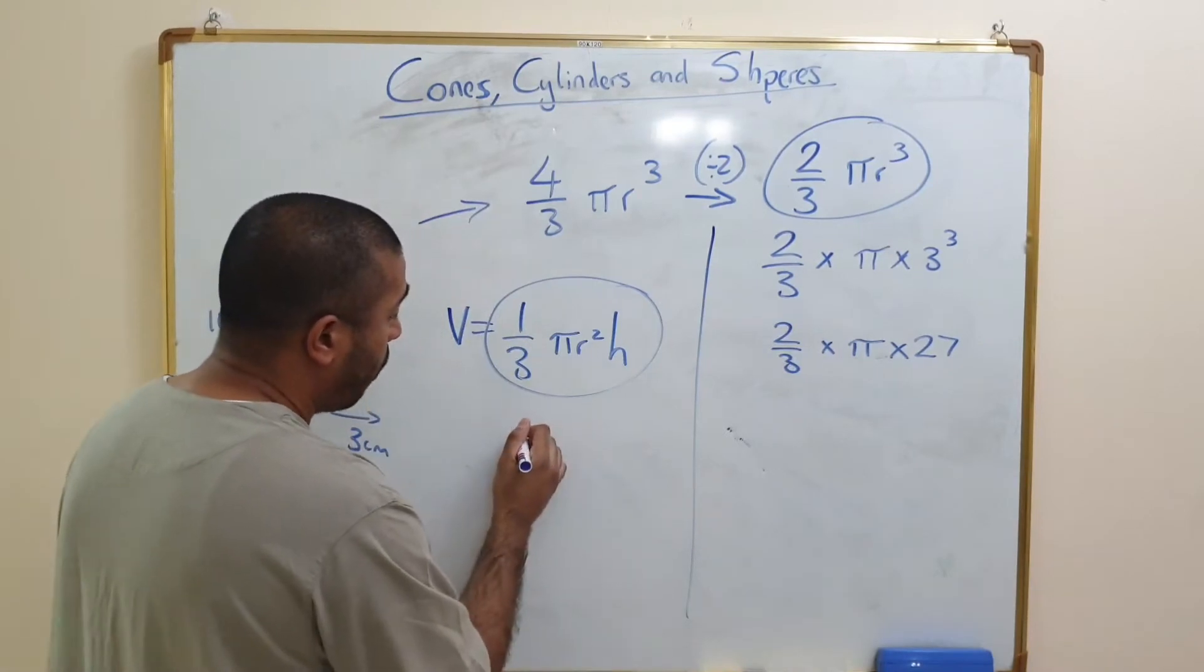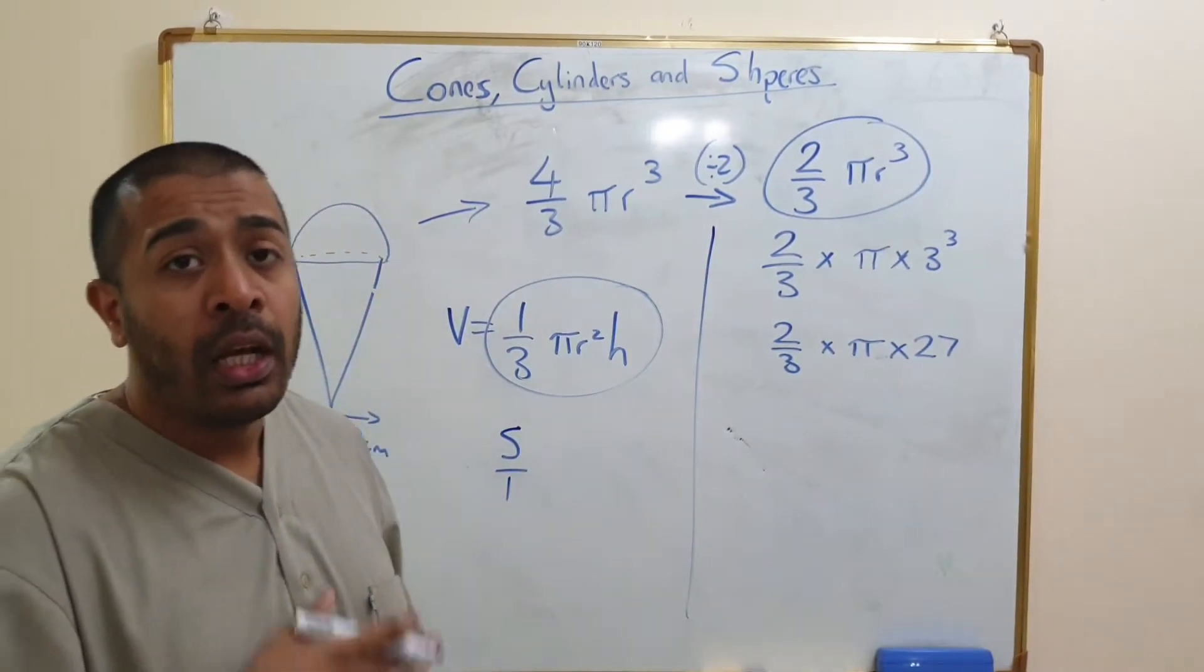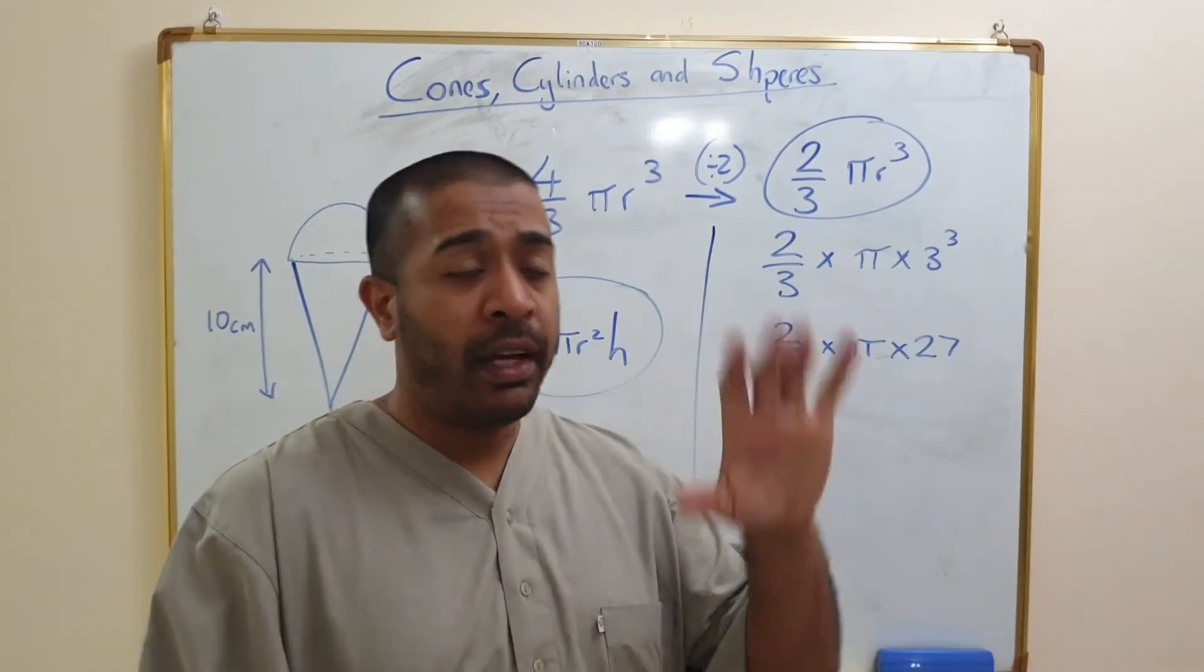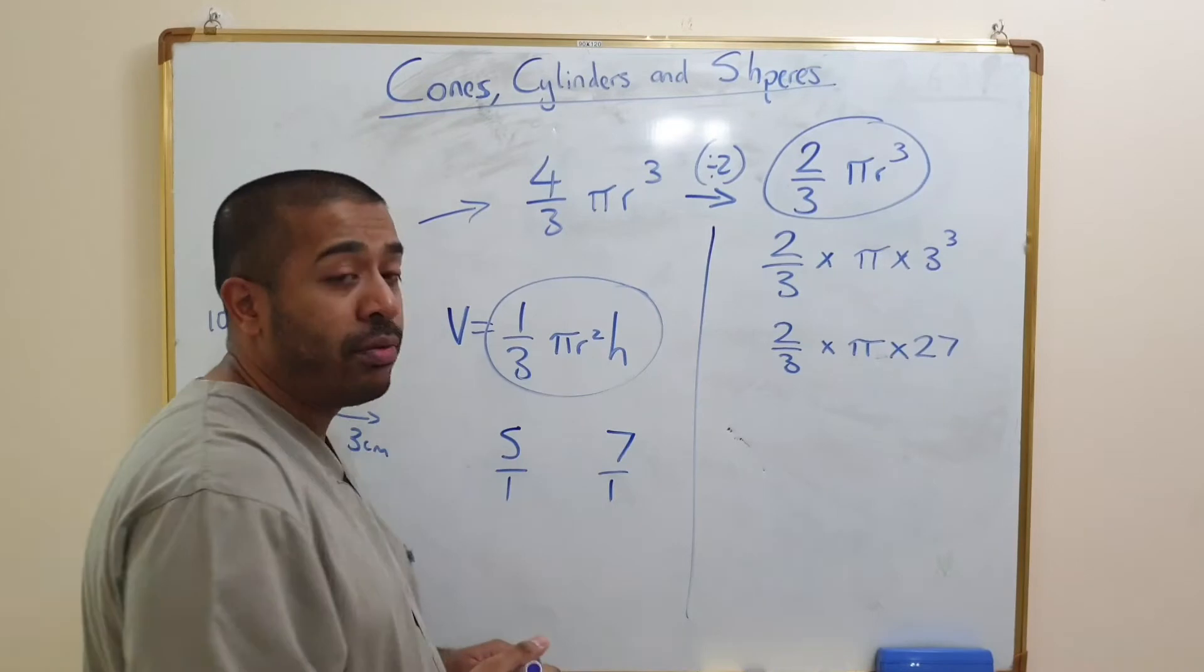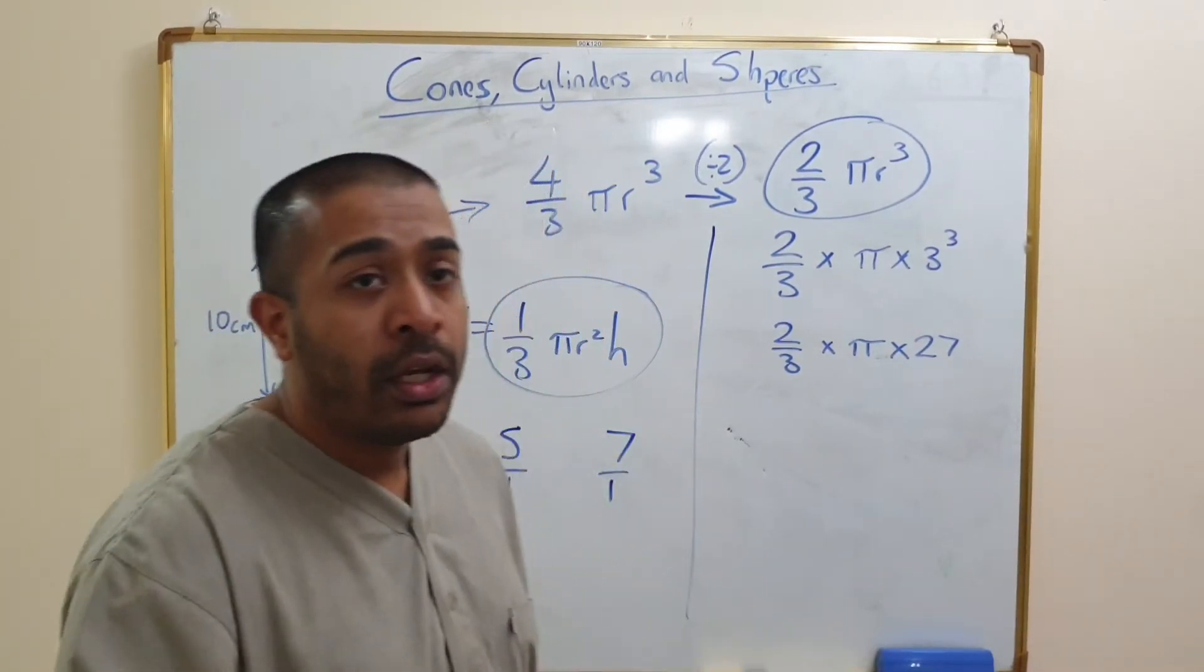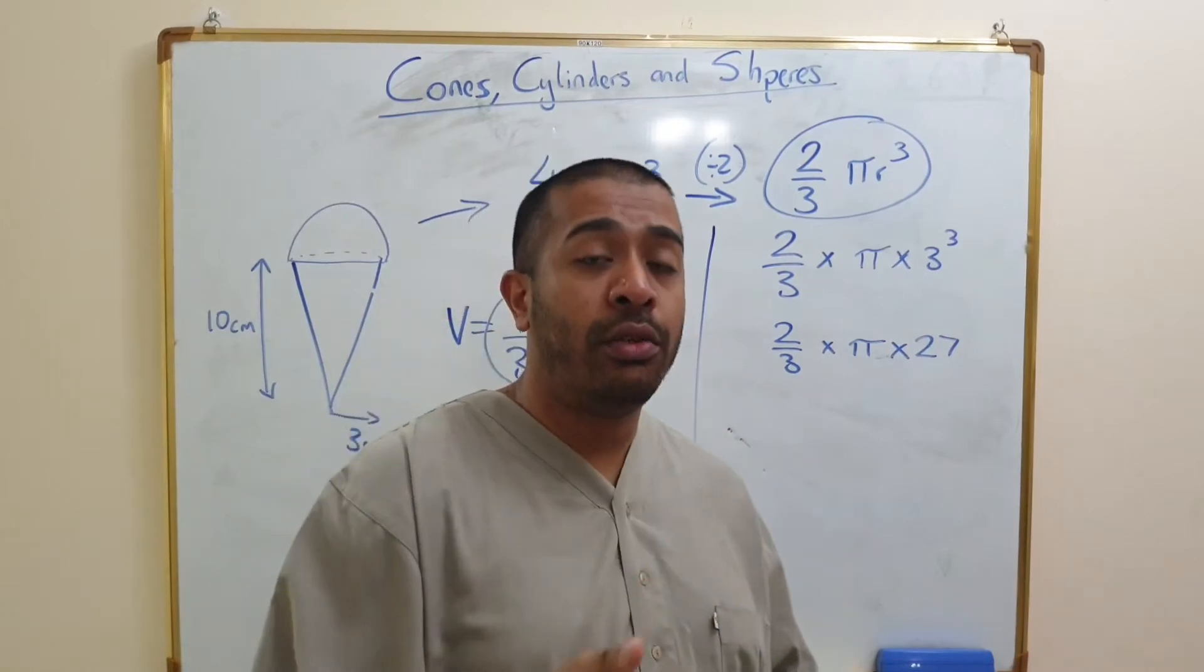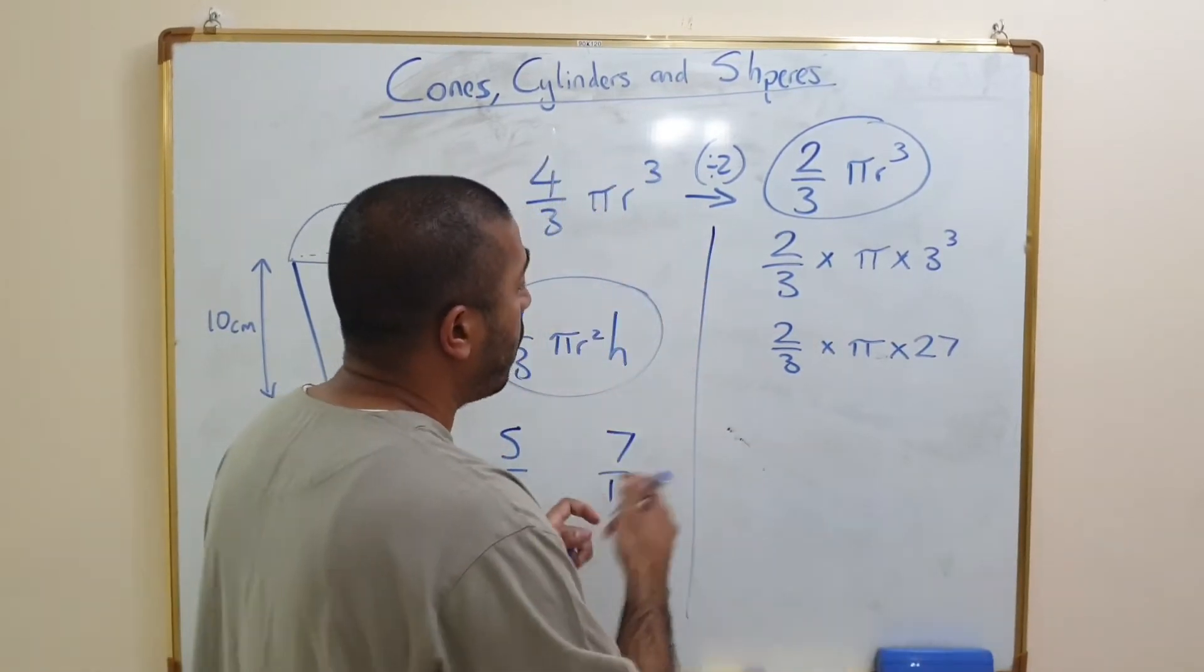To change a whole number into a fraction, let's put the denominator as one. Reason being, let's say for example if I had five and I put five over one, how many ones go into five? Five. Okay, what if I put the number seven, change that into a fraction, seven over one? How many ones go into seven? Seven. So any whole number that you want to change into a fraction, just make the denominator a one.